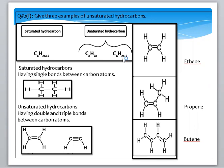If there is one double bond, the formula will be CnH2n. If there is one triple bond, the formula is CnH2n-2. Saturated hydrocarbons have all valences satisfied with single bonds only. Unsaturated hydrocarbons can have double or triple bonds.